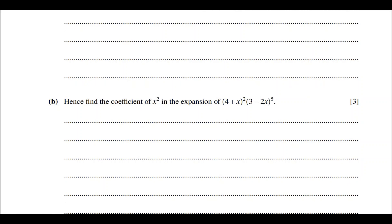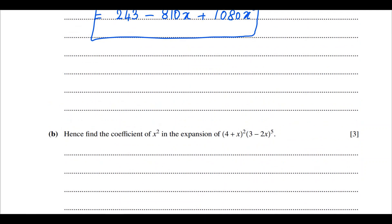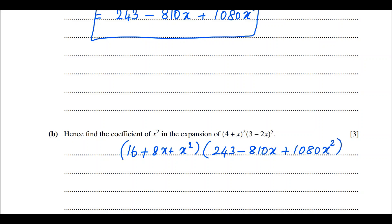The next part asks: find the coefficient of x² in the expansion of (4+x)² × (3-2x)^5. First we expand (4+x)² to get 16 + 8x + x². For (3-2x)^5, we use the answer from the previous part: 243 - 810x + 1080x².